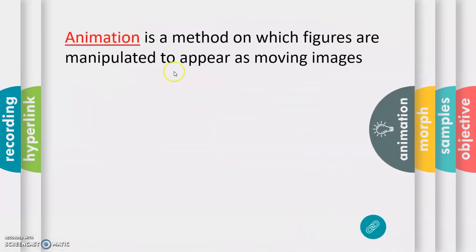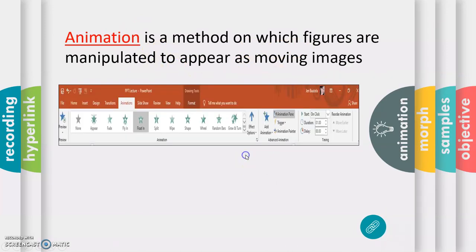Next is Animation. Animation is a method on which figures are manipulated to appear as moving images. Saan natin makikita sa ating PowerPoint? Ayan, dito sa taas na yan, menu button, sa animation, ayan siya. Ayan, may add animation, yung mga importanteng mabuksan natin mamaya sa ating animation, saka yung animation pane. So, lahat ng ito, yung none, yung appear, fade, fly, lahat ng yan ay tinatawag na animation na nagpapagalaw sa ating objects at sa ating text.